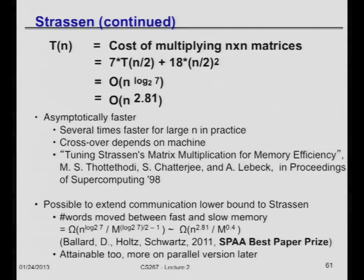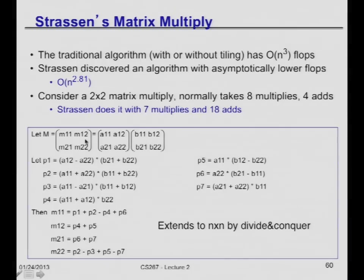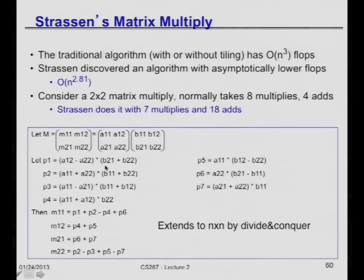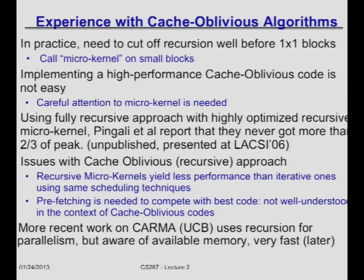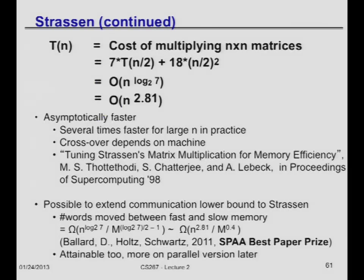Question: what does Strassen's algorithm look like? It looks like recursive matrix multiply: it forms about 10 different sums and differences of submatrices, calls itself recursively to do those 7 multiplies, then adds to get the final answer — very similar to RMM but with 7 recursive calls instead of 8. When Strassen first did this in the 1960s, people were amazed that matrix multiply could go faster. That set off a race to lower the exponent as close to 2 as possible. For many years the world record was 2.376, set by a very complicated algorithm by Coppersmith and Winograd in 1987.